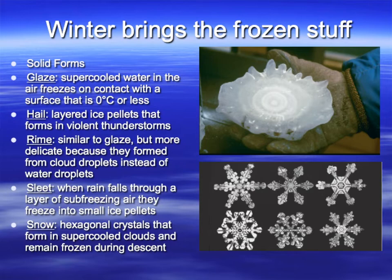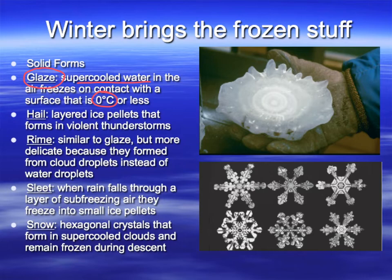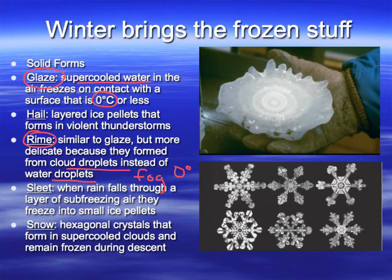Solid forms of precipitation: glaze forms when supercooled water near the surface — where the temperature has dropped below zero degrees — comes in contact with a surface that is also below zero degrees. It freezes on contact and you start getting icing on surfaces, which is very dangerous. Rime ice is similar to glaze but more delicate because it forms from cloud droplets — fog near the surface — rather than supercooled water droplets in the air. The temperature is below zero and this fog comes in contact with the surface and freezes on contact; still a hazard but not as thick as glaze ice.